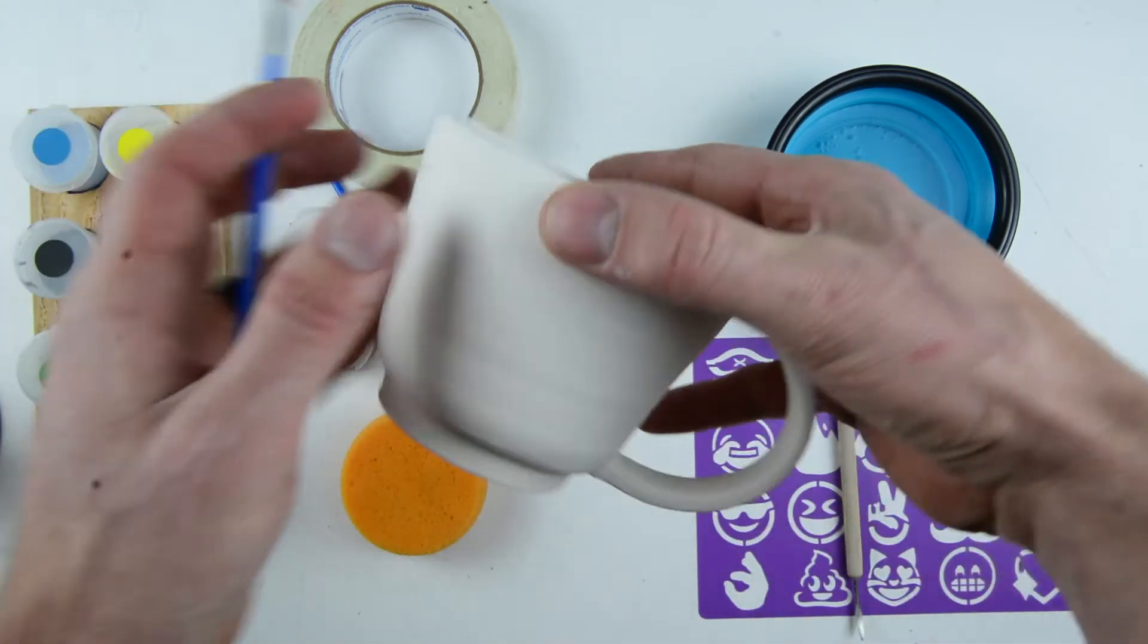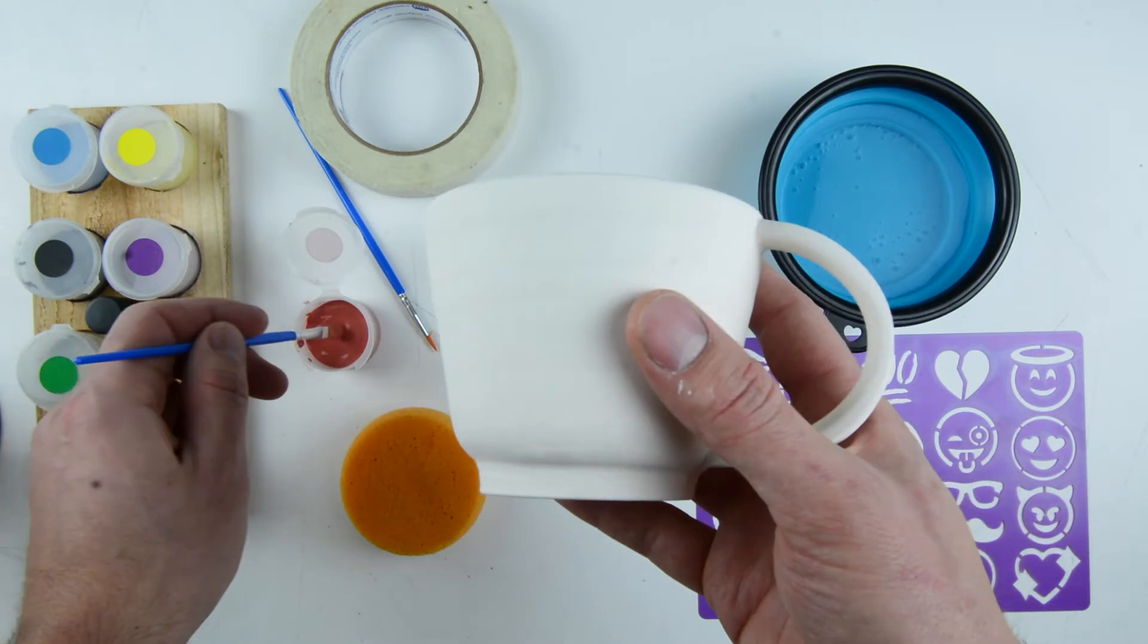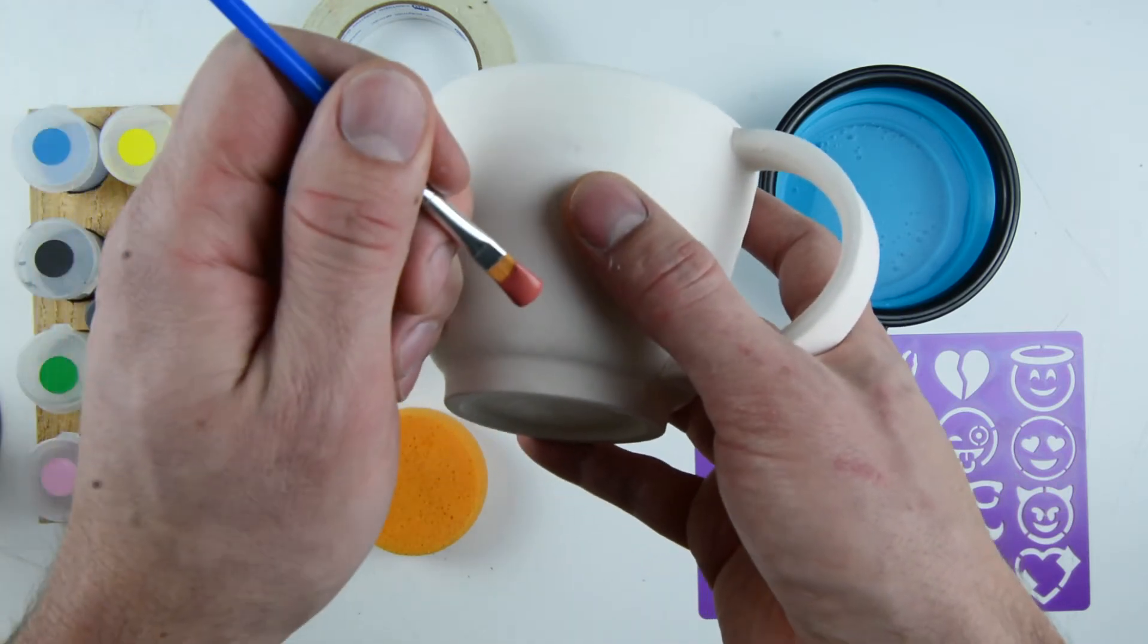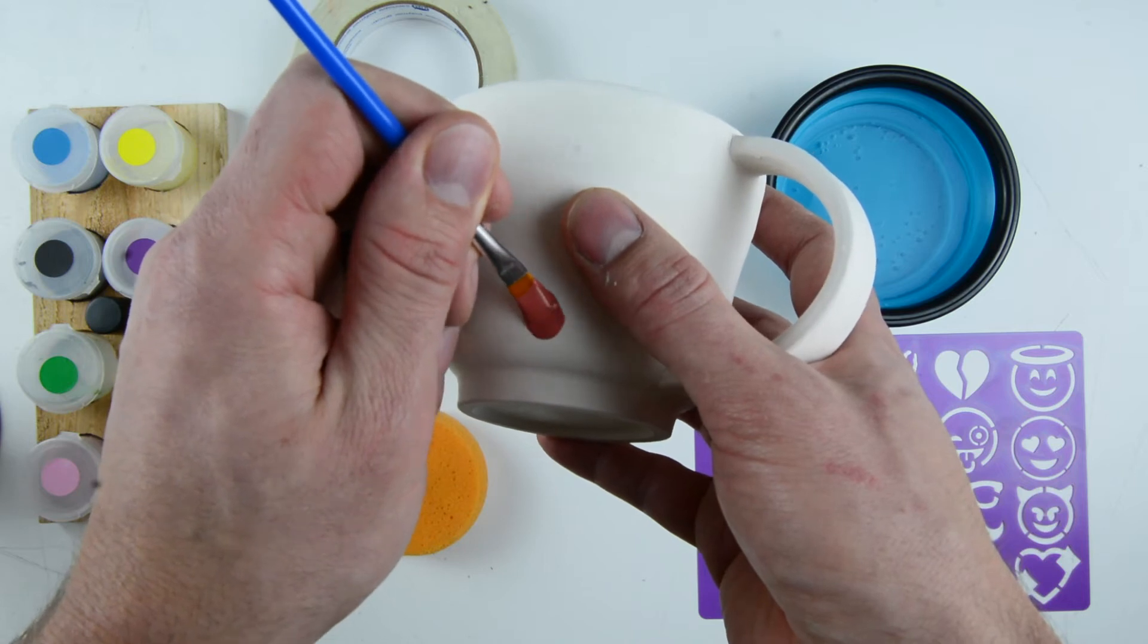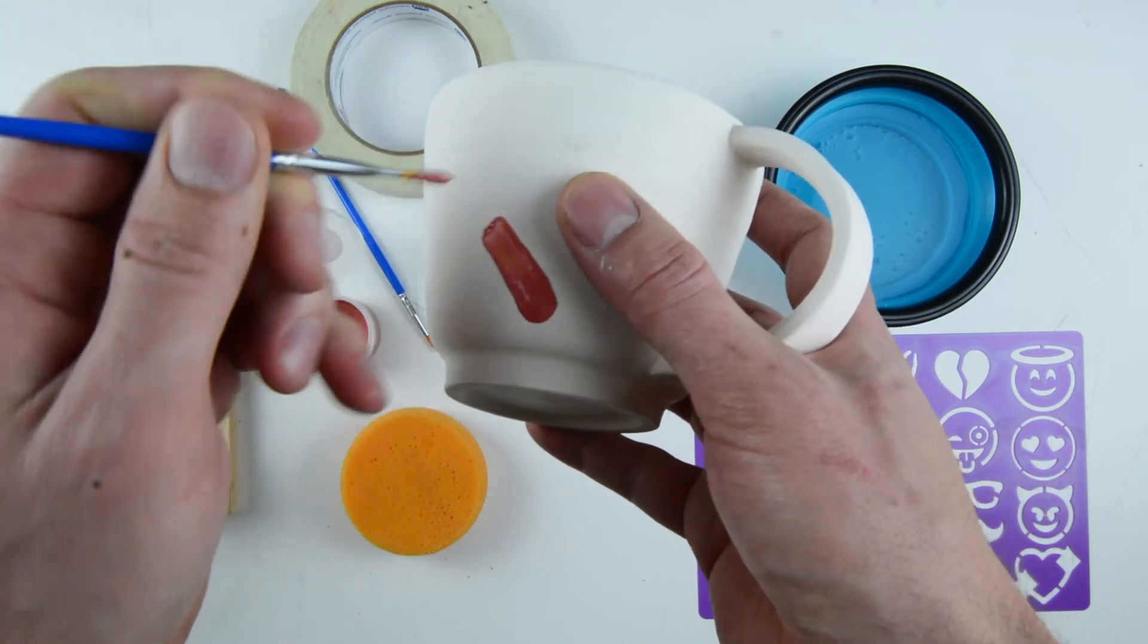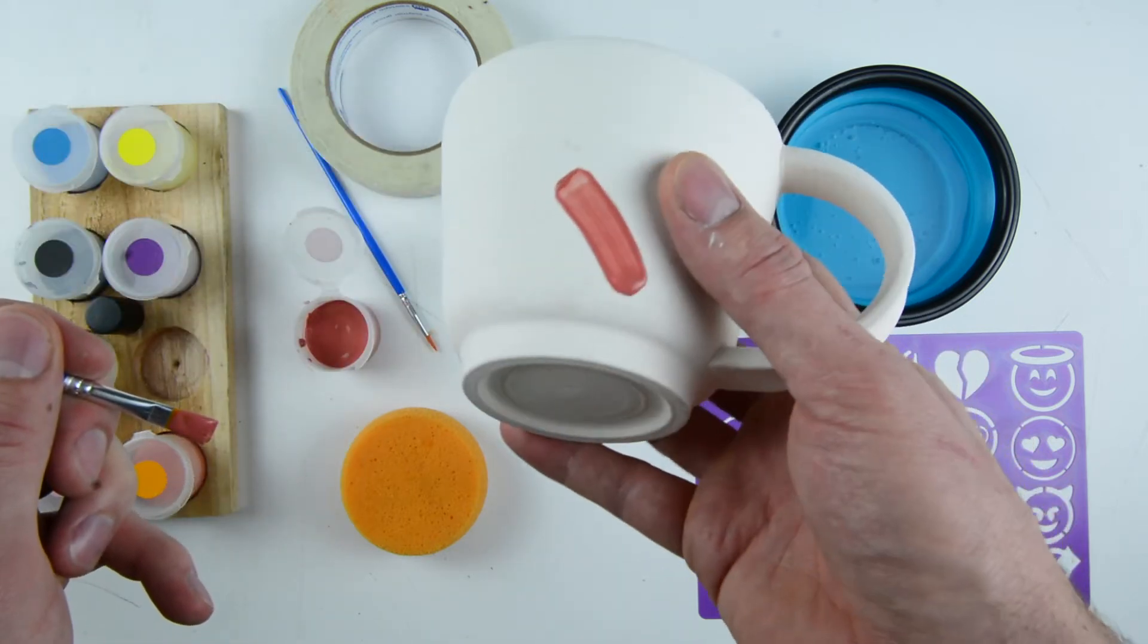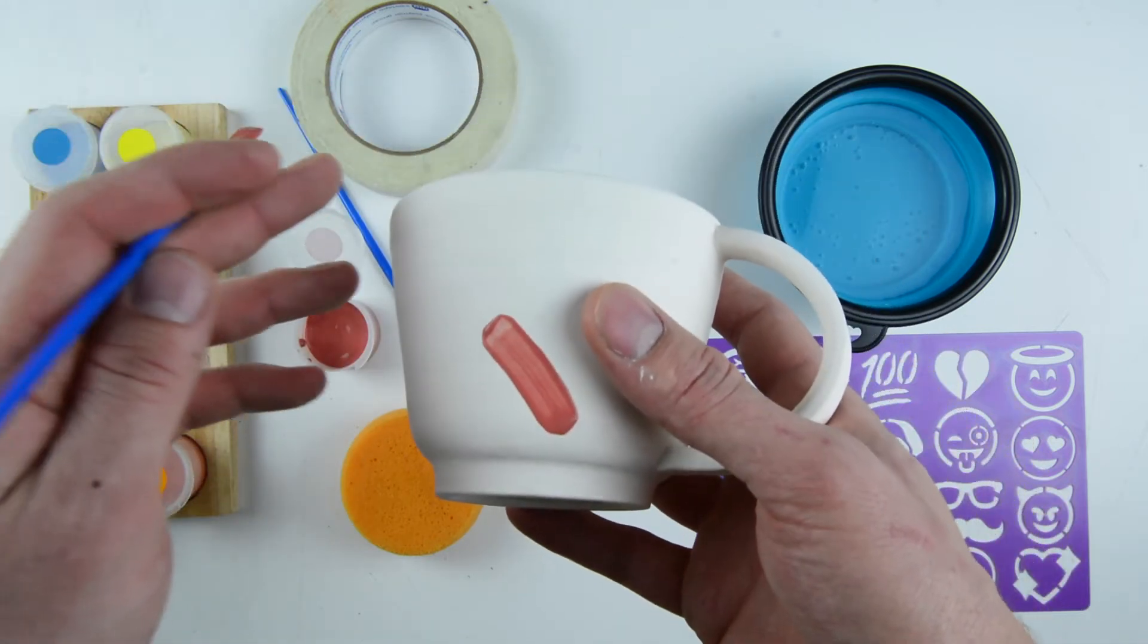As you paint the mug, you'll notice that the paint dries fast as the mug pulls the water from the paint. As a good rule of thumb, you want at least three layers of paint. Please look at the color reference board to get a better idea of what the colors look like as you paint more layers.